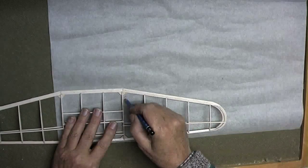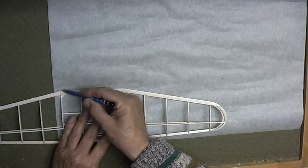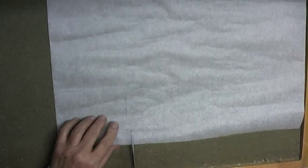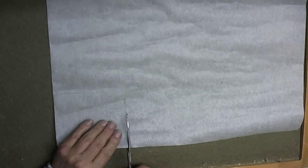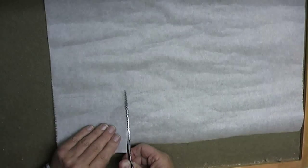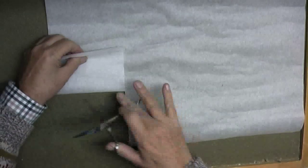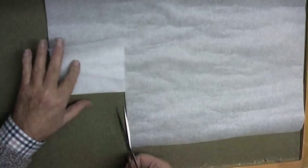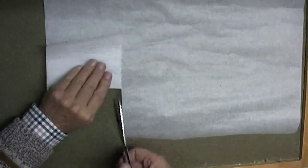A visit to my local model shop provided the answer. For 45 pence, I bought a sheet of what we used to call rag tissue. This stuff is very strong with a close mat of fibres.